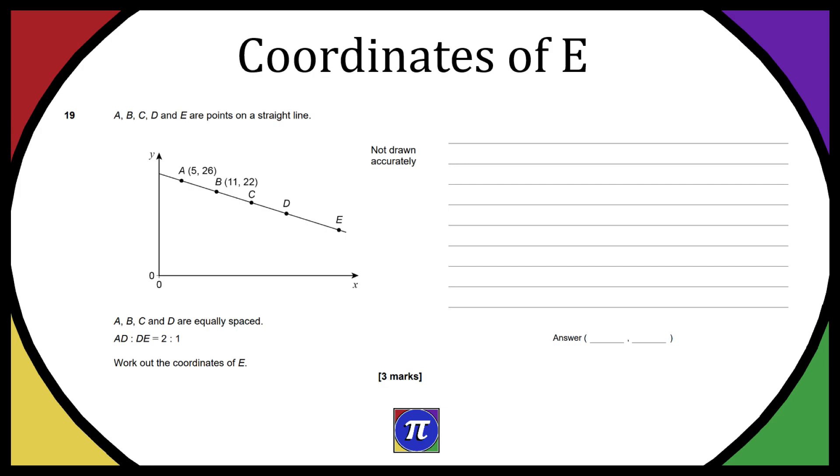So question number 19 says that A, B, C, D and E are points on a straight line. It does say that this diagram is not drawn accurately. We have an x-axis, a y-axis and we have four points A, B, C, D and E all on a straight line. We're given the coordinates of point A which is (5, 26) and the coordinates of B which is (11, 22).